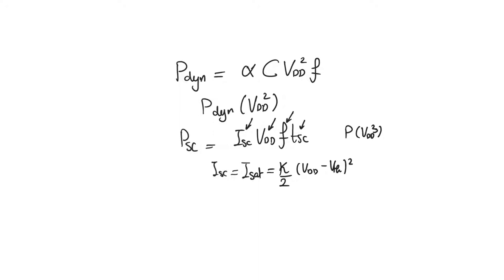So in short, if we look at both expressions of power, the most effective way to reduce power dissipation is to reduce power supply. For dynamic power, we can also reduce power by reducing the operating frequency, by reducing the activity factor — which is usually very difficult to do because it is dependent on the function of the circuit — and by reducing capacitance, which is a function of the area and sizes of the transistors, but this is also not so easy to do.